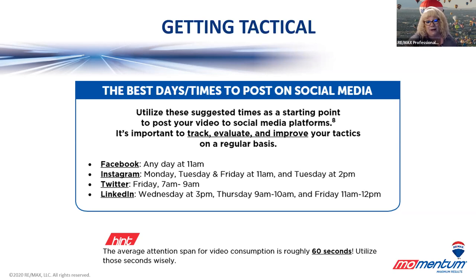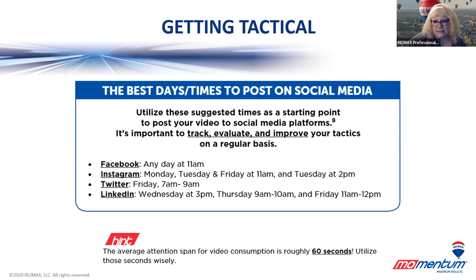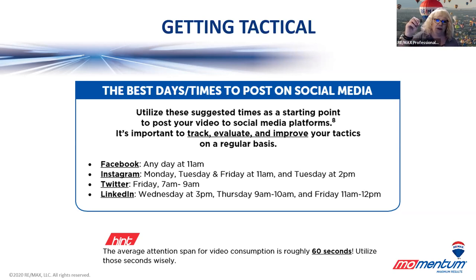Instagram: Monday, Tuesday, and Friday at 11 a.m., and Tuesday at 2 p.m. If you're active on Instagram, pay attention to your own rhythms — when are your people most engaged with you? Twitter: Fridays between 7 and 9 a.m., though you could probably post anytime since Twitter is more of a fast news outlet. LinkedIn: Wednesday at 3 p.m., Thursday between 9 and 10, and Friday between 11 and 12. These are suggestions based on research and they do change.